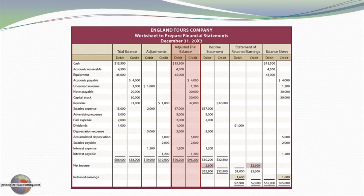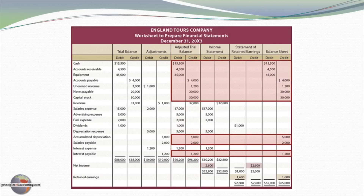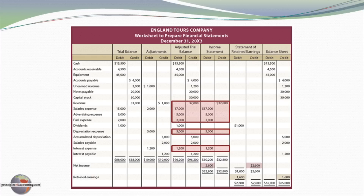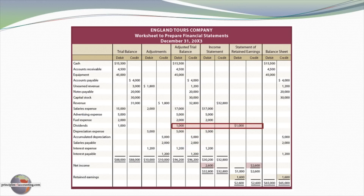There is a set of columns for the income statement, for the balance sheet, and for the statement of retained earnings. Accounts that relate to the balance sheet — such as cash, accounts receivable, and so forth — are extended into the appropriate debit or credit column in the balance sheet section. Likewise, revenue and expense accounts are extended, maintaining their credit or debit character, into the income statement columns. Dividends are extended into the retained earnings column as a debit balance. Once we've extended each amount from the adjusted trial balance into the appropriate financial statement columns, we're ready to start closing out the worksheet.